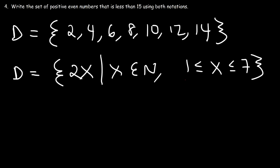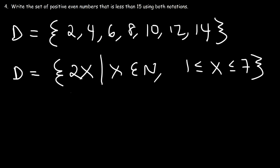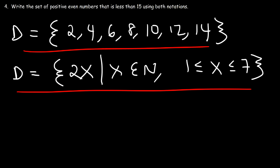From 1 to 7, we get the numbers 2, 4, 6, 8, 10, 12, 14. When X is 2, 2X is 4; when X is 3, 2 times 3 is 6; when X is 4, 2 times 4 is 8, and so forth. That's how you can describe this set using the roster method and set-builder notation.